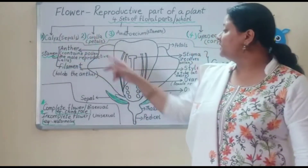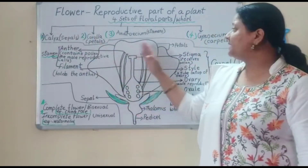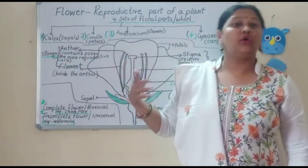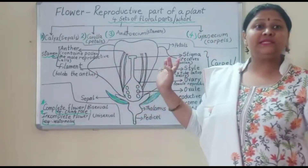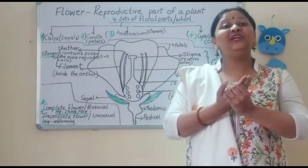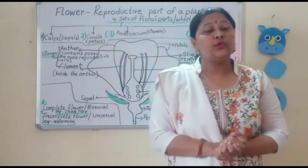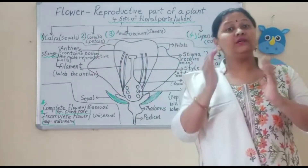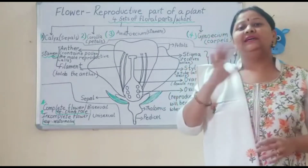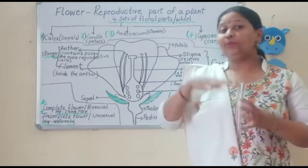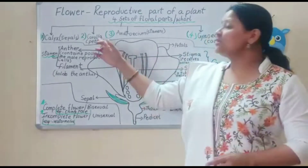Now coming to the second whorl. Above the calyx, what is there? The petals — the colored part. It can be white or colorful as well, and these are known as petals. Petals combined are called corolla. Just remember: color, corolla — it's a similar word. So collection of petals is known as corolla.